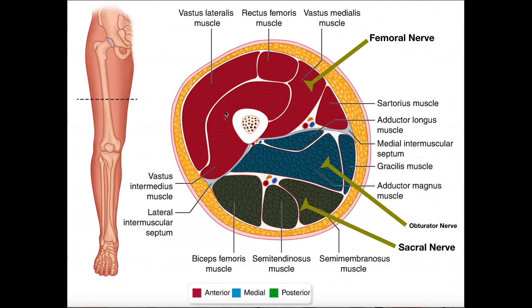In addition to functional compartmentalization based on action, the other nice thing about this is it tends to divide muscles based on nerve supply as well. In general, the quadriceps femoris muscle group is innervated by the femoral nerve. The medial compartment — the hip adductors, the adductor group — these tend to be innervated by the obturator nerve. And the posterior muscles, the hamstrings, would be innervated mostly by the sacral nerve. There are a few exceptions — for example, some branches of the femoral nerve might innervate a little bit of the adductor muscles — but generally speaking, the functional division by the intermuscular septa and fascia reflects not just the action of the muscles but also the tendency based on nerve supply.